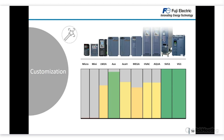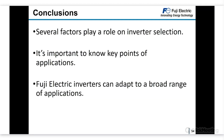Let me make some conclusions. Several factors play a role in inverter selection, and it is important to know the key points of the application in order to make the right choice — always using the best inverter for every application is not appropriate, as it may be overkilling the requirement. Fuji Electric inverters can adapt to a broad range of applications. We have specialist products for certain applications, and our general-purpose inverters also have many tools for customization and adaptation to different applications.